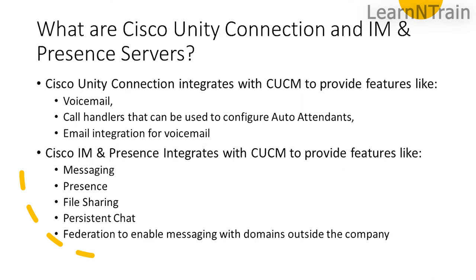What are Cisco Unity Connection and IM and Presence servers? Cisco Unity Connection integrates with CUCM to provide features like voicemail, call handlers that can be used to configure auto-attendant, and email integration for voicemail. Cisco IM and Presence integrates with CUCM to provide features like messaging, presence, file sharing, persistent chat, and federation to enable messaging with domains outside the company.